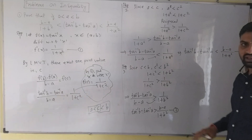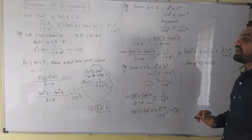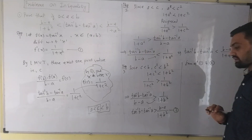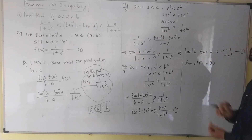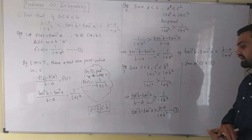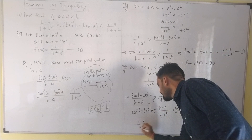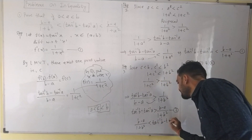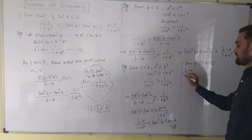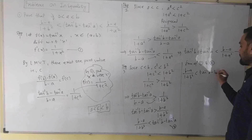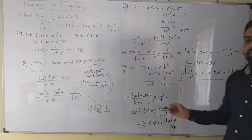Looking at both equations — from equation 1 and 2 — as per our proof: tan inverse b minus tan inverse a is greater than b minus a upon 1 plus b square, and less than b minus a upon 1 plus a square. So from 1 and 2 we can write: b minus a upon 1 plus b square, less than tan inverse b minus tan inverse a, less than b minus a upon 1 plus a square. And this is the proof.